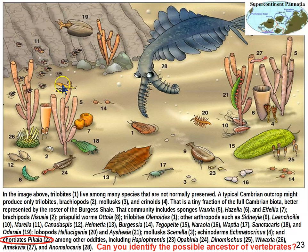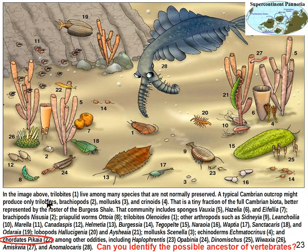Pikaia, number 22 in the diagram, is a little swimming worm-like thing that is possibly our own ancestor alive back in the Cambrian. It had something sort of like a backbone called a notochord, which makes it a chordate — our own phylum, phylum Chordata. But it didn't have a backbone — it was still an invertebrate with a backbone-like supportive structure.